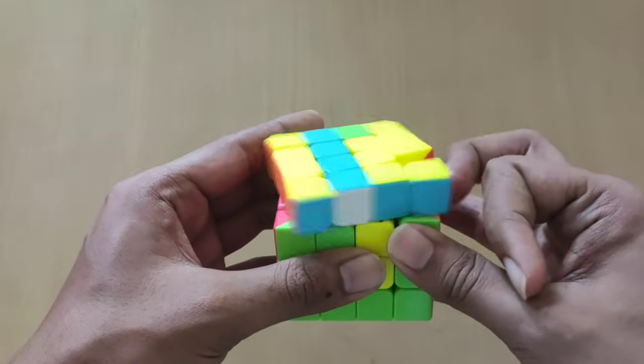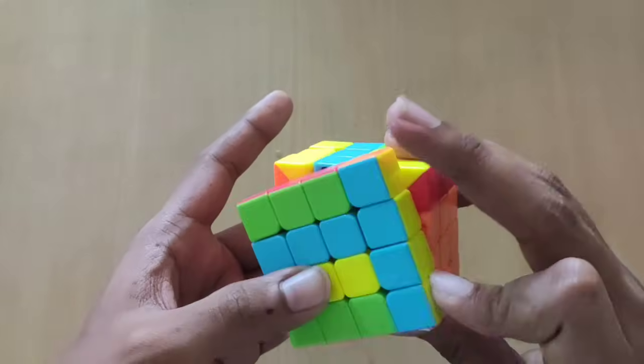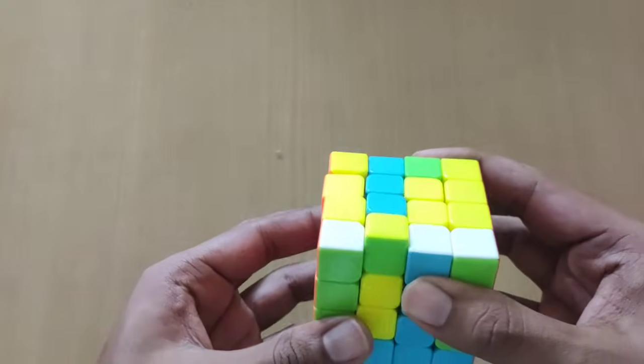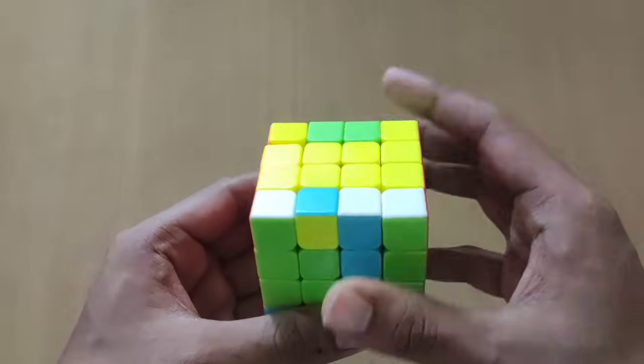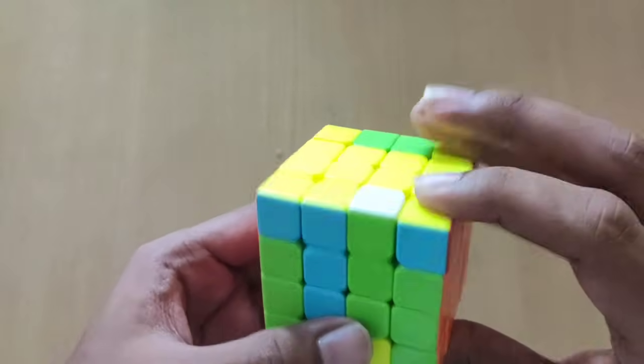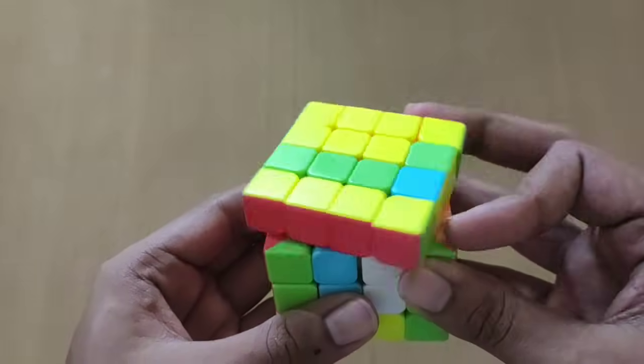Small r prime, U2, small l, f2, l prime, F2. Then you have to do small r2, U2.